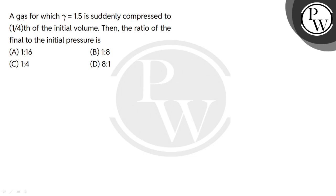Hello, let's read the question. A gas for which gamma equals 1.5 is suddenly compressed to 1/4th of the initial volume. Then the ratio of the final to the initial pressure is: